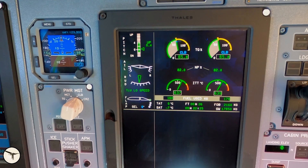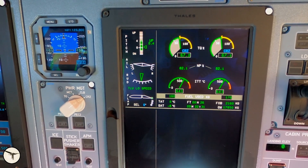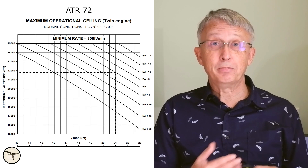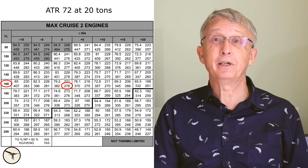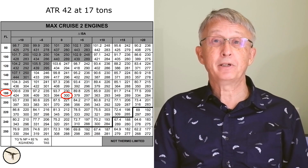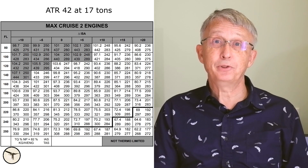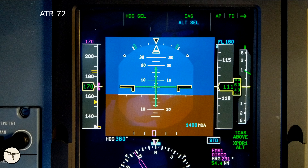When ATR developed the 42-500, they promised potential customers a cruise speed of 300 knots. But test flights proved that the aircraft was too slow. So ATR increased the cruise power until they reached the goal of 300 knots. As a consequence, the 42 has a higher cruise power than climb power. The cruise altitude depends on aircraft weight and atmospheric temperature. The altitude for maximum cruise speed is 16,000 feet for ATR 72 and 18,000 feet for ATR 42. Normal climb speed for ATR 42 is 160 knots, and for ATR 72 it is 170 knots.